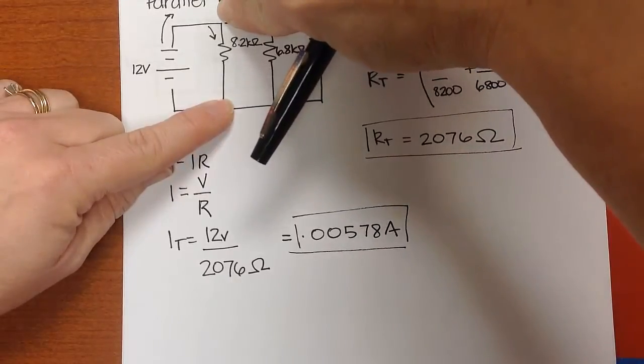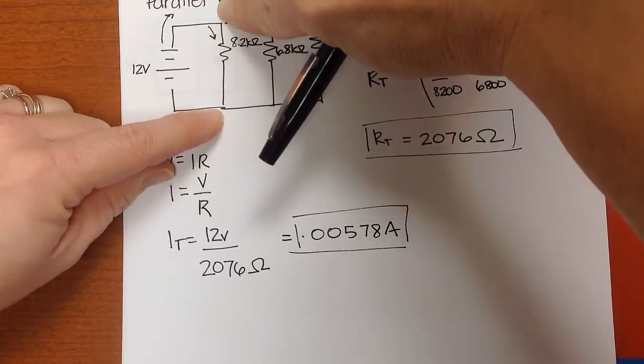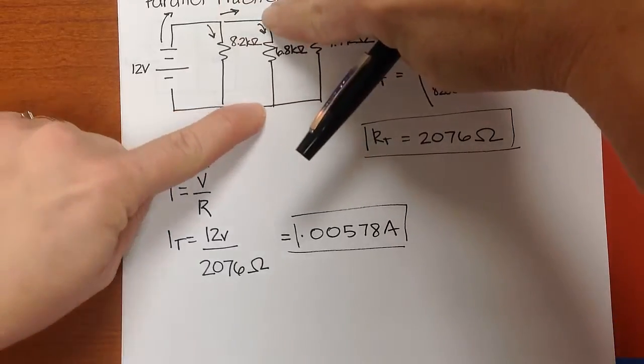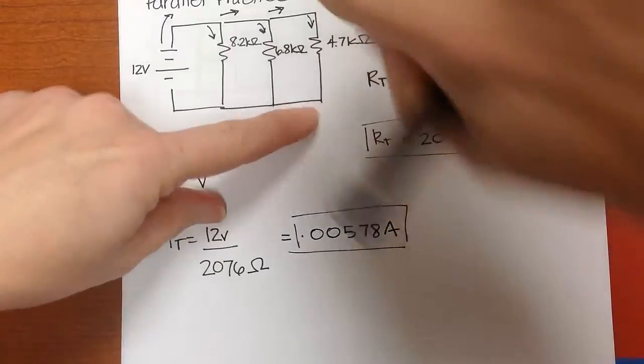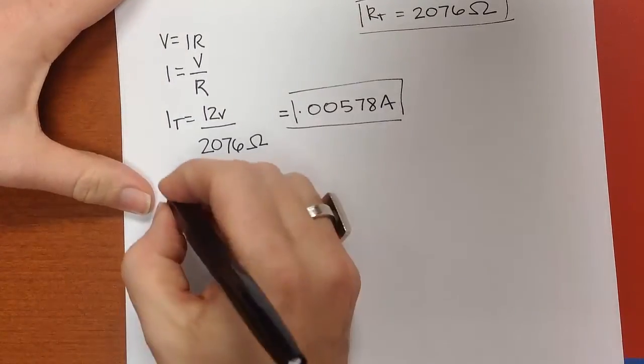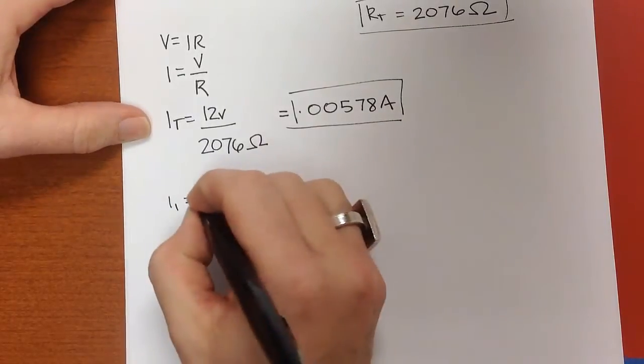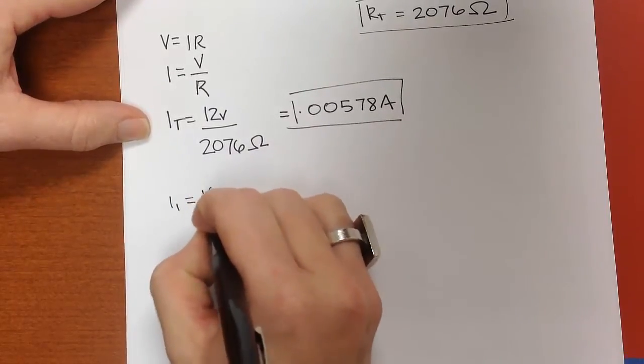So it's V equals I times R again. So I here is going to be V divided by R, here V divided by R, and here V divided by R. So we'll use I1 is equal to V divided by R1.